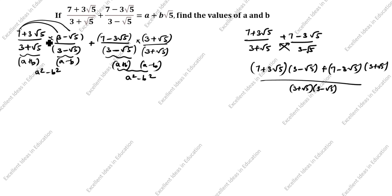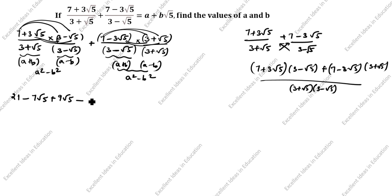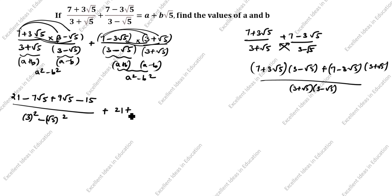Now multiply each term: 7 × 3 = 21, plus × minus = minus 7√5, plus 3√5 × 3 = 9√5, plus × minus = minus 3√5 × √5 = minus 15. Denominator: 3² - (√5)². Then: 7 × 3 = 21, 7 × √5 = plus 7√5, minus 3√5 × 3 = minus 9√5, minus 3√5 × √5 = minus 15. Denominator: 3² - (√5)².